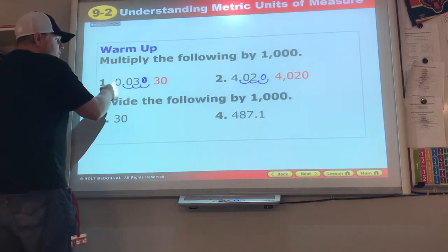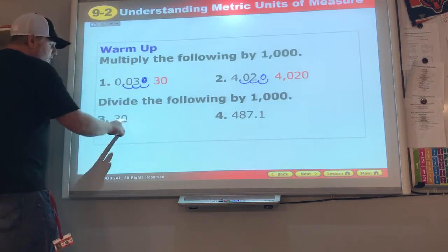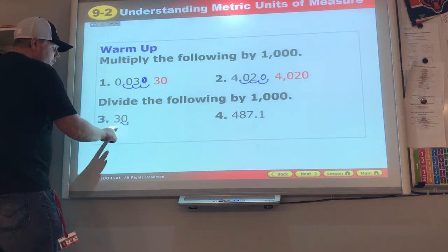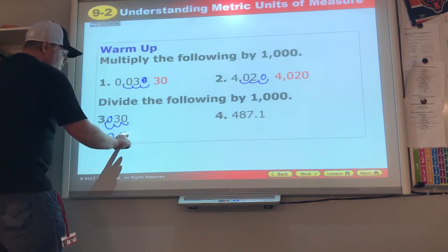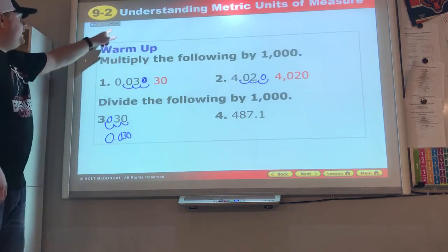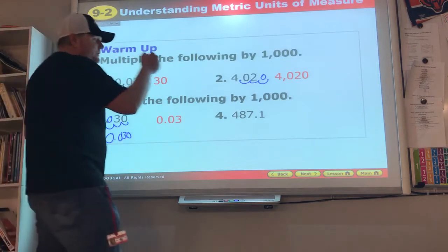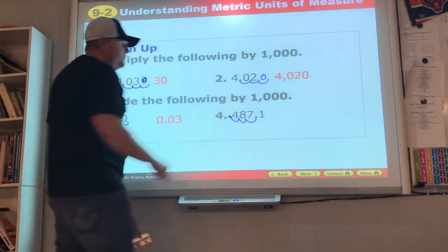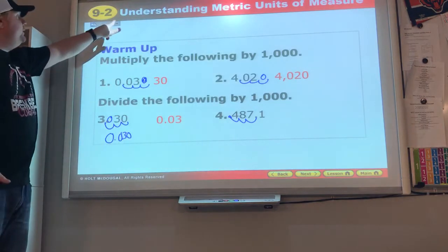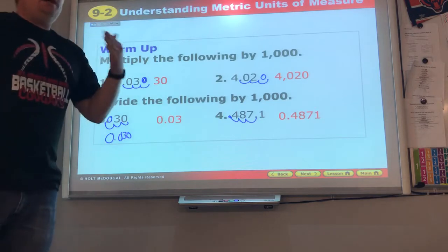When multiplying, the number gets bigger, so we go to the right. We did get bigger numbers. Dividing, we start at the decimal: one, two, three, placeholder - 0.030. That number did get smaller. A thousand, three zeros: one, two, three - 0.4871. We have our answer.